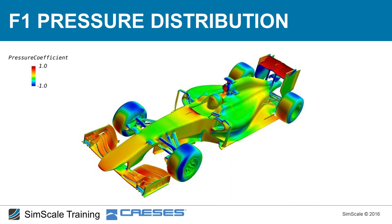Now let's look at CFD pressure distribution images. The front wing shows high pressure on the top surface generating downforce; the nose also generates some drag. Nose design must balance drag reduction with crash test structural requirements — you can make the nose thin, but it must withstand crash tests, while also having favorable aerodynamic characteristics for the underchassis region.